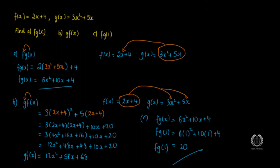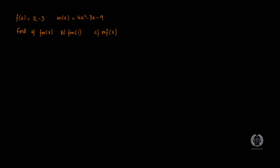If you have any questions, put them in the comments and I'll get back to you. Now here are some practice questions — pause the video, try them out, then play back to check. For part (a), find f(m(x)): take the m function and put it inside f. So instead of x you have 4x² − 3x − 9, giving 4x² − 3x − 9 − 3 = 4x² − 3x − 12. That is your f(m(x)).